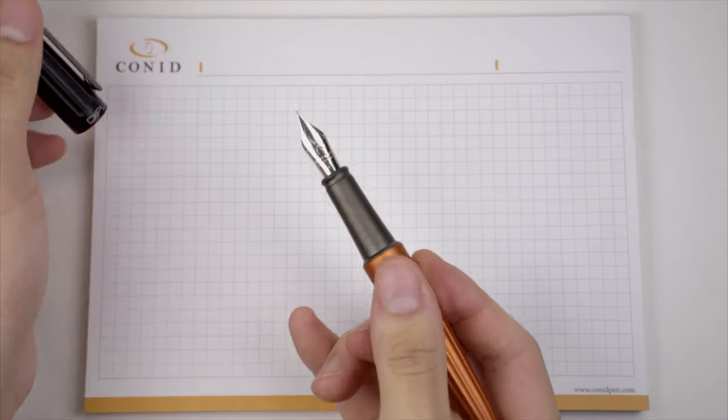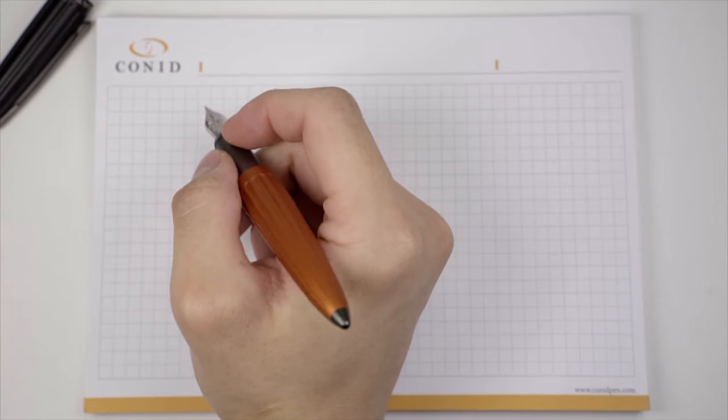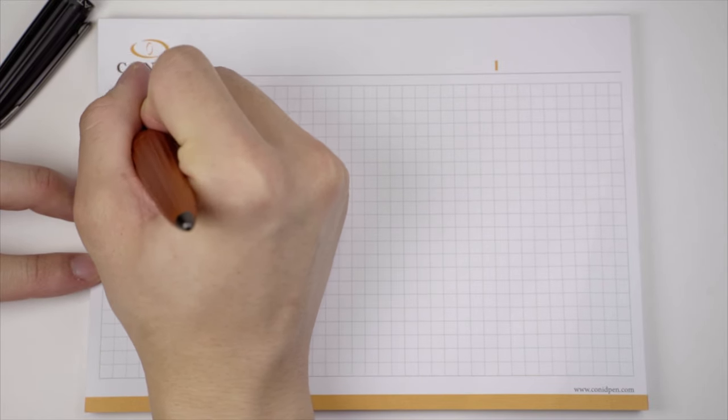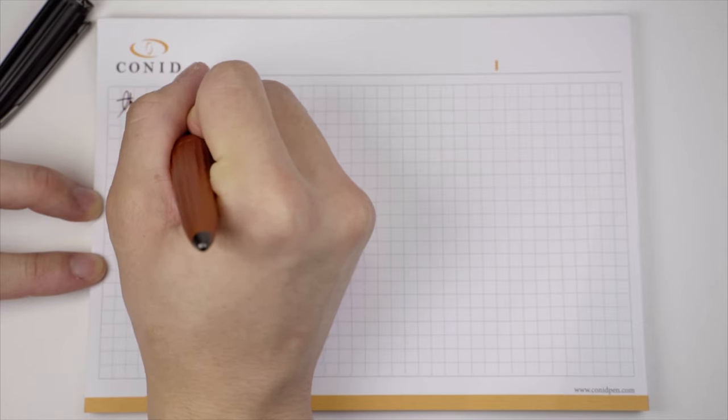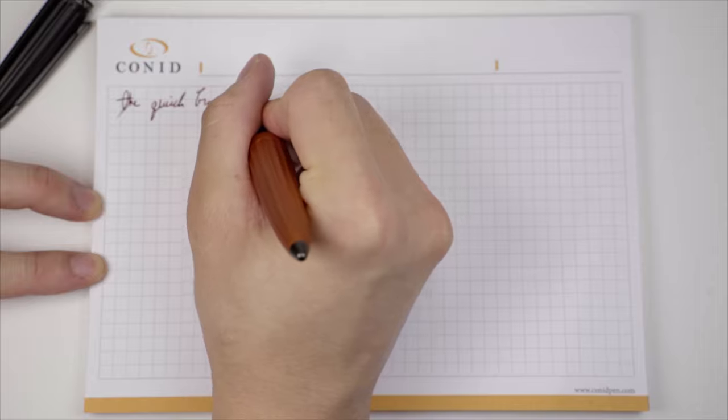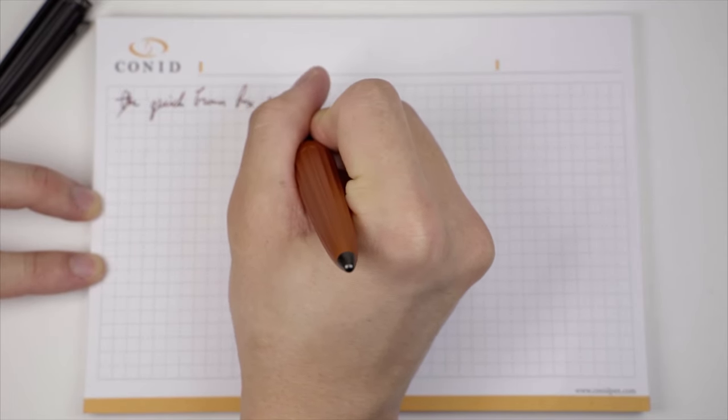Writing with this pen is a complete joy. The steel nib is probably one of the best steel nibs I've ever used. This pen can also be bought with a gold nib. But given how well the steel nib writes, I would argue that unless you really want the gold nib, I would save the cash and get the steel because I don't think the gold would write any better. It's just that good.